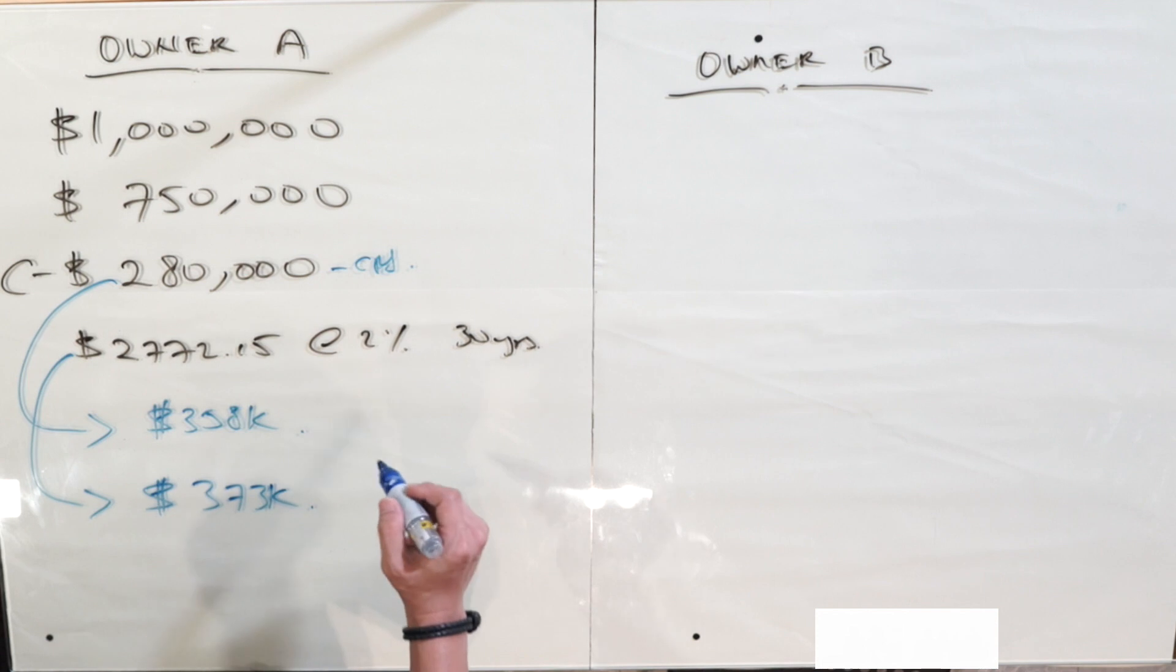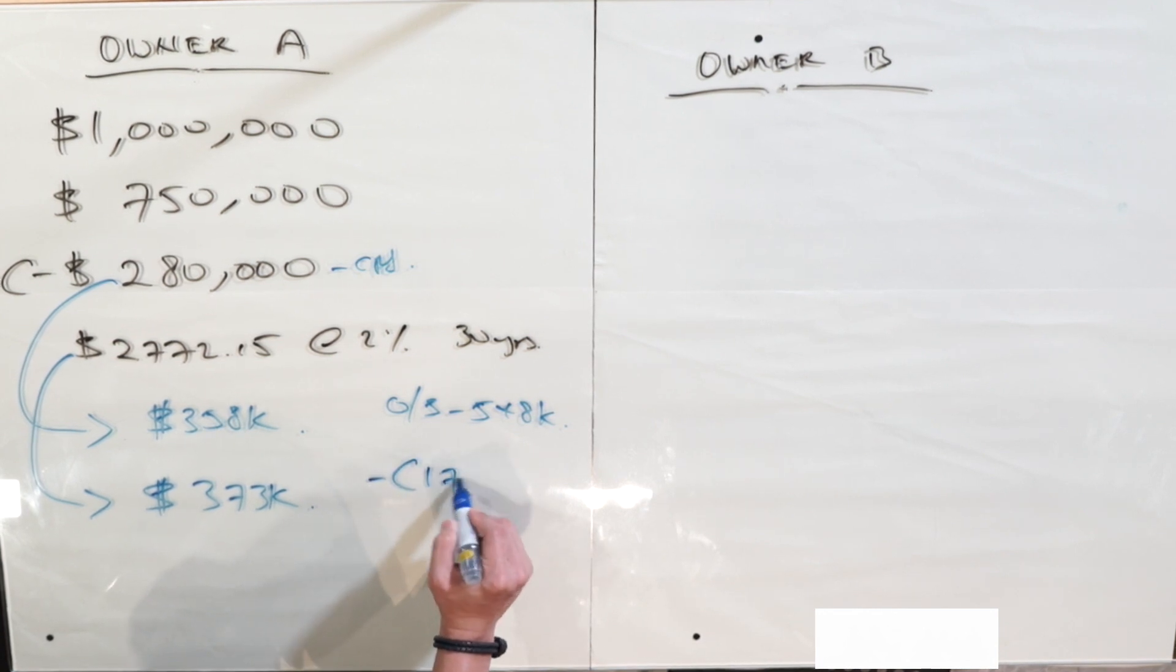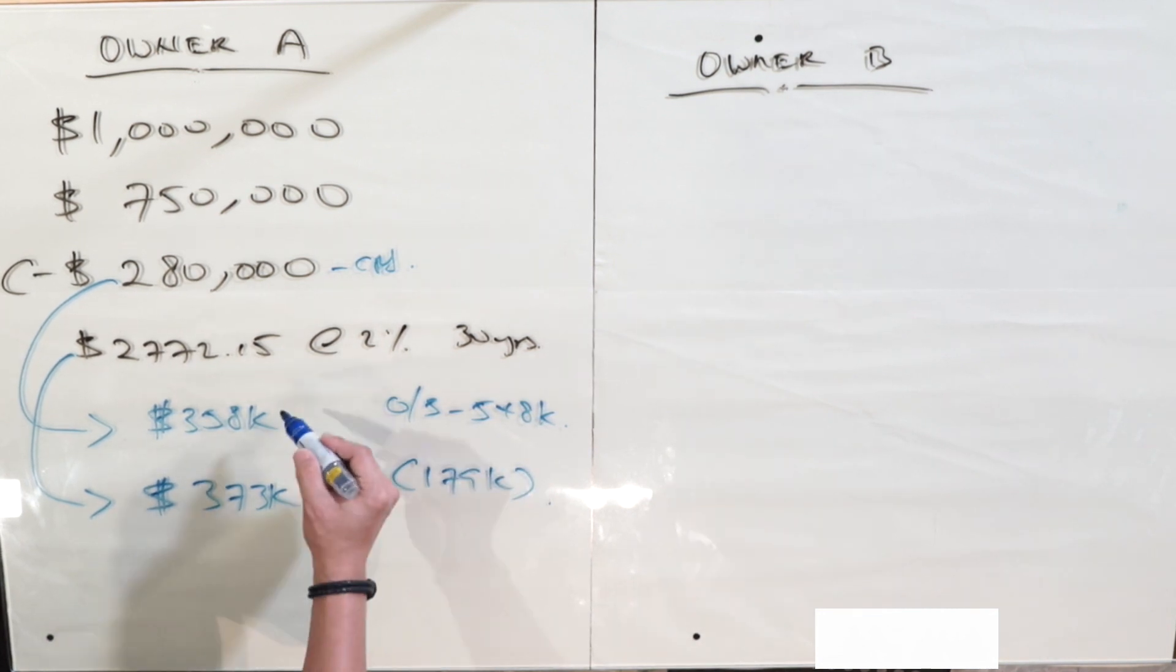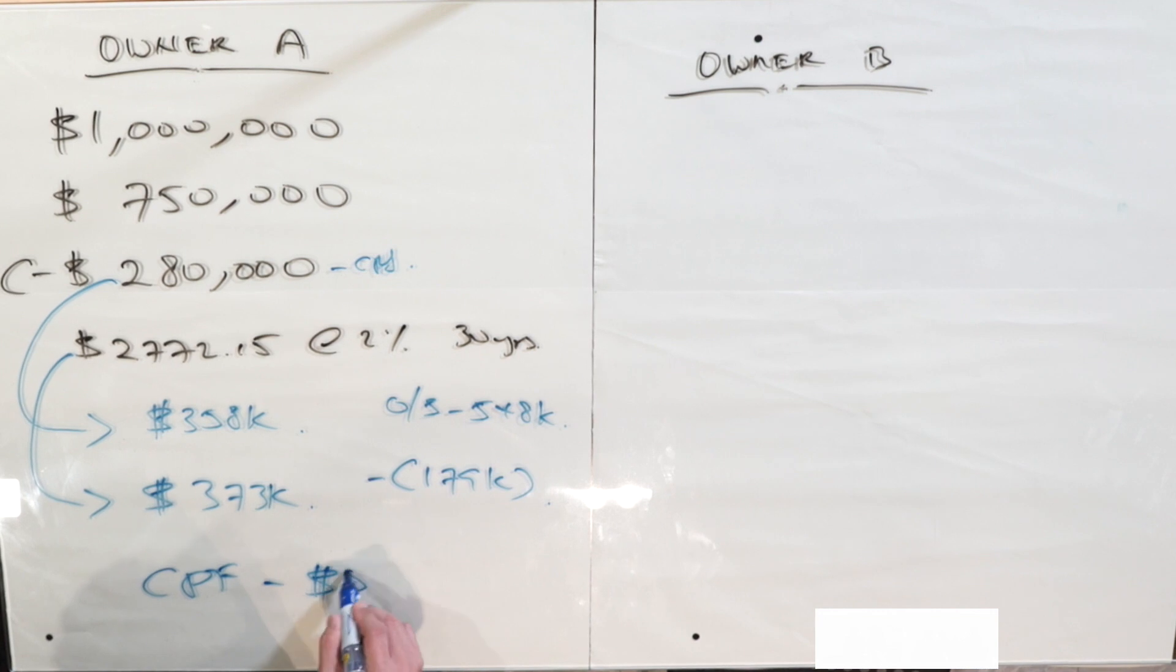At the time 10 years later, your outstanding loan will be approximately $548,000. So what I'm doing here is I'm just rounding off the figures to the nearest thousand dollars. So if you add all these three up, you realize that for owner A, he will actually be having a negative sale of $179,000. So after 10 years, after selling at $1.1 million, you minus all these figures, you will have in the CPF after that of only $552,000.